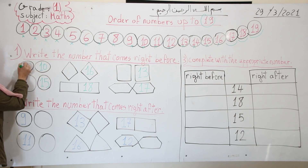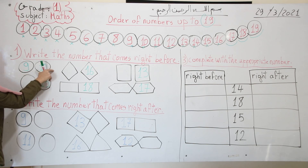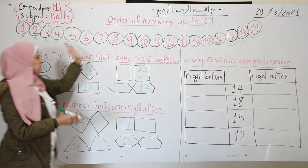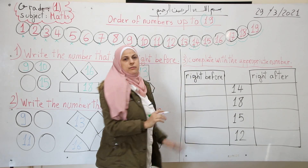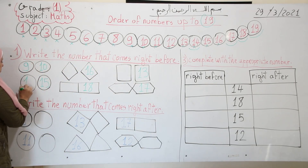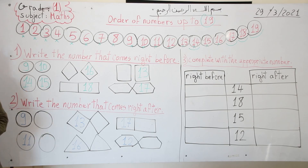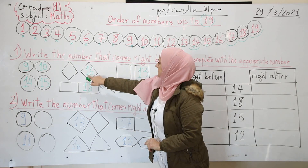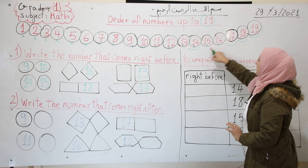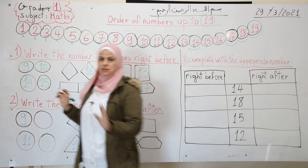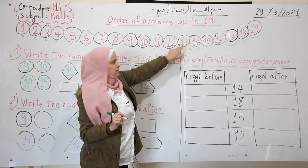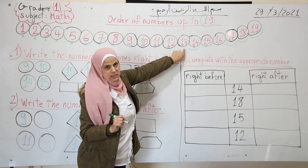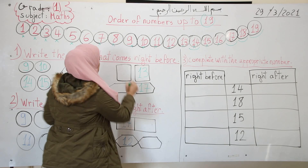So I write 9 here — 9 comes before 10. Now I have 15. I look at number 15 on the number line and find the number that comes right before 15 — that is number 14. So I write 14 in this circle. And 14 comes before 15. Now for 16: 15 is right before 16, so I write 15. For 13: 12 comes right before 13.